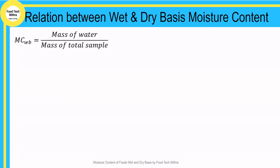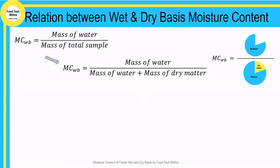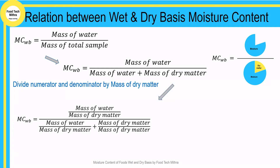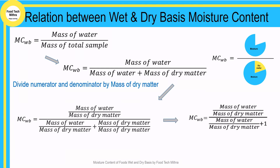Taking moisture content on a wet basis, the denominator is the total mass of the sample, which can be written as mass of water plus mass of dry matter. So moisture content on a wet basis equals mass of water divided by (mass of water plus mass of dry matter). Now divide both numerator and denominator by mass of dry matter, giving: (mass of water / mass of dry matter) divided by (mass of water / mass of dry matter + 1).